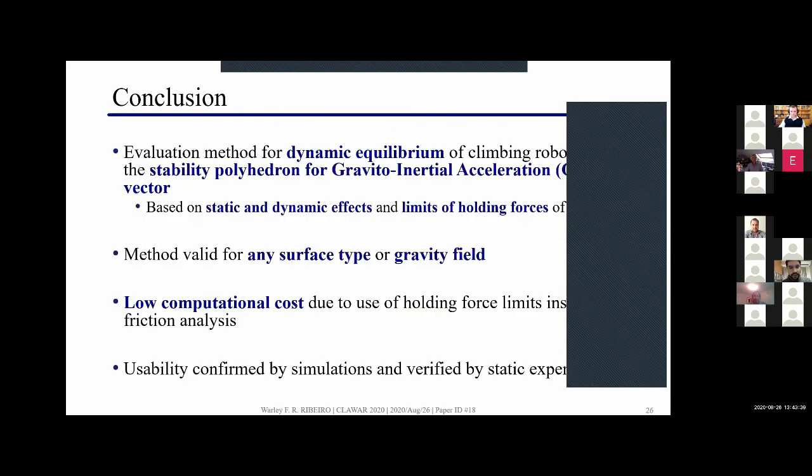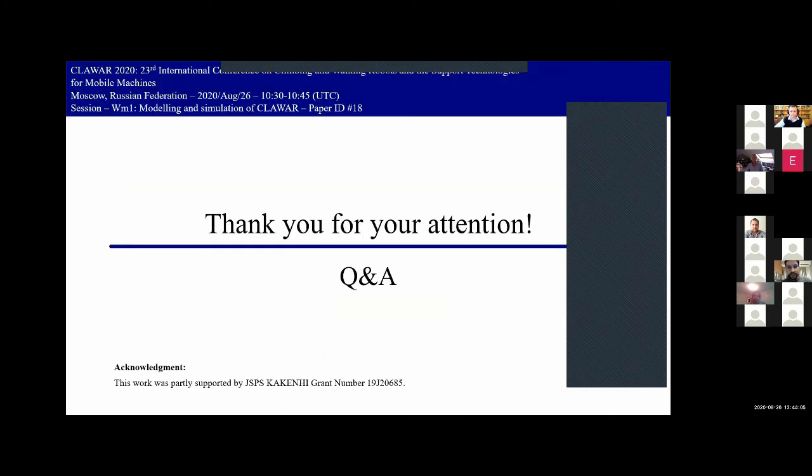Now for the conclusions we presented here a method to check the equilibrium of climbing robots based on the static and dynamic effects and the limits of holding forces. By computing the stability polyhedron for the GIA which can be applied for any surface or any gravity field and based on the low computational cost method, we also provide simulation experiments to validate the usability of this method. Thank you very much, now I'm happy to answer any of your questions.